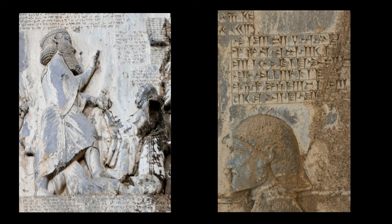Sections 58–59: "King Darius says: By the grace of Ahura Mazda I did much more, which is not graven in this inscription. On this account it has not been inscribed, lest he who shall read this inscription hereafter should then hold that which has been done by me to be excessive and not believe it and take it to be lies. Those who were the former kings — as long as they lived — by them was not done thus as by the favor of Ahura Mazda was done by me in one and the same year."